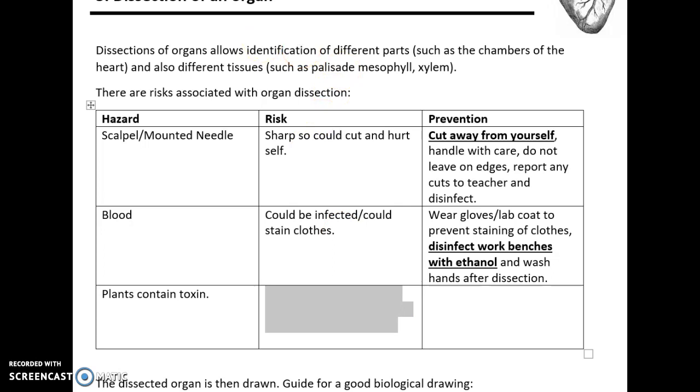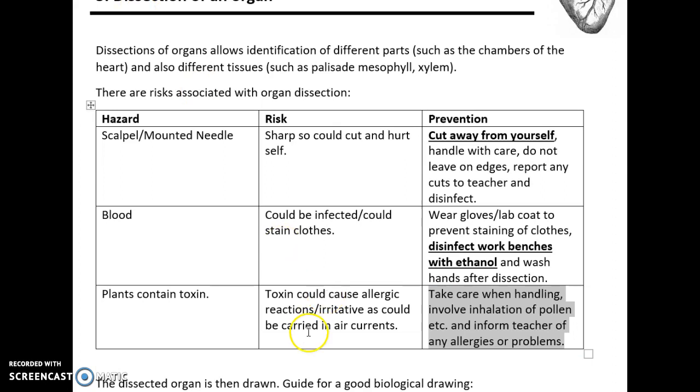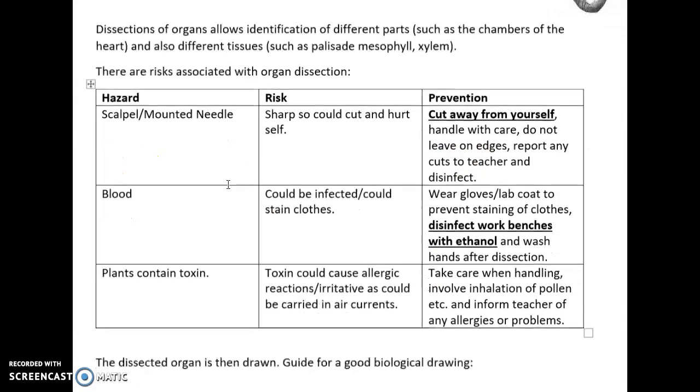If they give the context of a plant organ dissection, plants contain toxins. The toxins in plants could cause an allergic reaction as it's irritative because it's carried in the air current. Chemicals could be inhaled, and therefore to prevent that, take care when handling due to the inhalation of pollen, work in a well-ventilated area, and prevent any allergic reactions by informing the teacher. This is the only way they could ask it. The more likely one will probably be the first one.